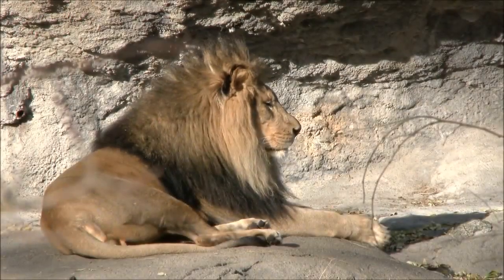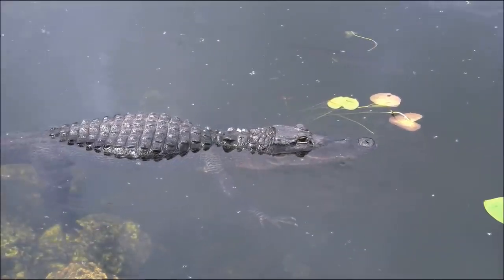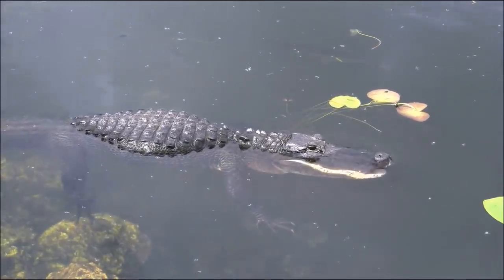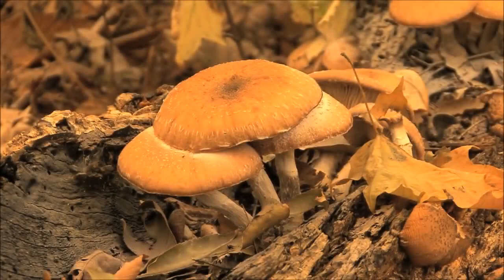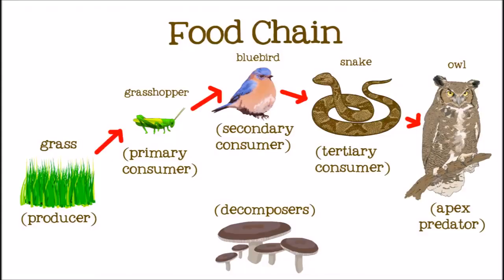Apex predators are not hunted and eaten by any animals — we say that they are at the top of the food chain. You probably recognize a lot of apex predators, like lions, sharks, eagles, and crocodiles. Just because they don't get eaten doesn't mean they don't contribute to the food chain. When an animal dies, their body is broken down by decomposers — usually bacteria and fungi — that break down dead plants and animals into nutrients in the soil, which in turn help the plants at the beginning of the food chain to grow. It's the circle of life!